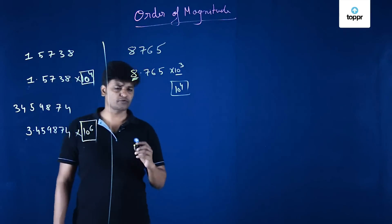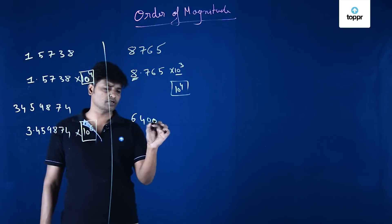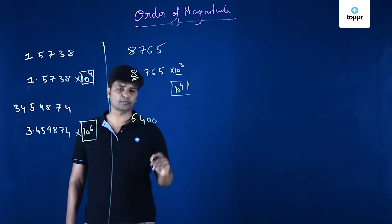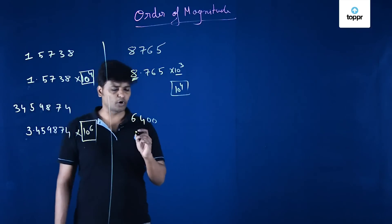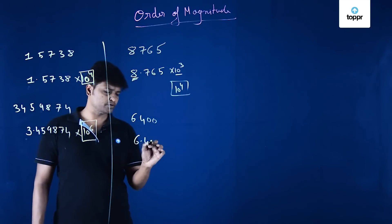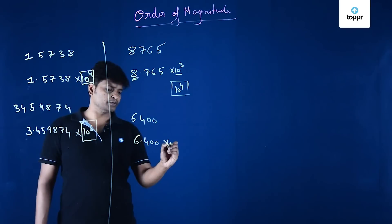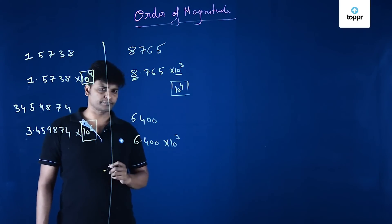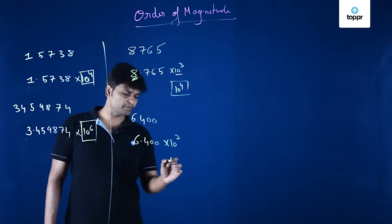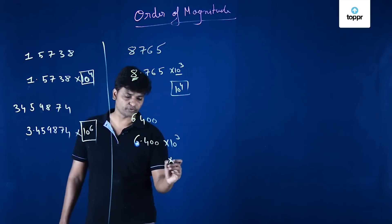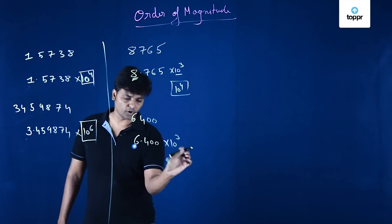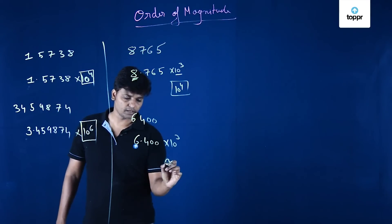For example, the radius of the Earth is 6,400 kilometers. The order of magnitude is 6.400 × 10^3. The leading digit is 6, which is greater than 5, so the order of magnitude is 10^4.